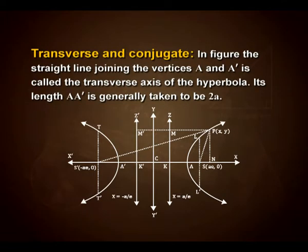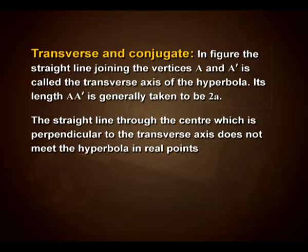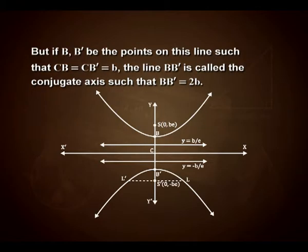Transverse and conjugate axes: the straight line joining the vertices A and A' is called the transverse axis, with length AA' = 2a. The straight line through the centre perpendicular to the transverse axis does not meet the hyperbola in real points. If B and B' are points on this line such that CB = CB' = b, then BB' is called the conjugate axis with BB' = 2b.